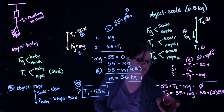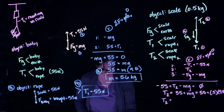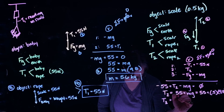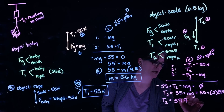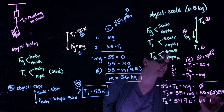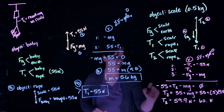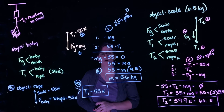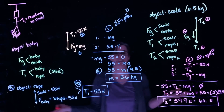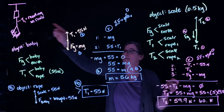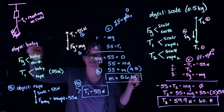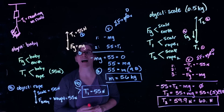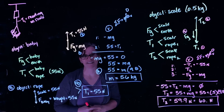Solving for the tension in rope two, we find that it is 59.9 newtons—or rounding to two significant figures, approximately 60 newtons. There's a little more tension in T2 than in T1 because this rope is holding up the entire system, which includes the mass of the scale.